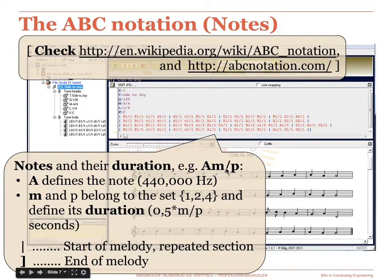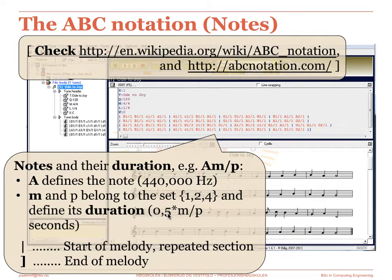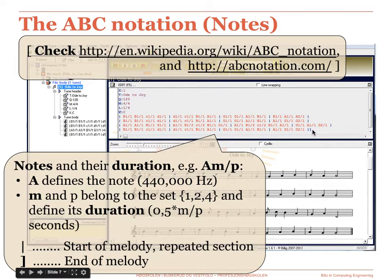Each note is followed by two numerical parameters called M and P. Both of these parameters have the value of 1, 2, or 4, and they represent the multiplication factor that defines the note duration. Assuming a base time of half a second, if M and P are respectively 2 and 1, we will have a note lasting for one second. Notice also that the vertical bar is used to mark the start of the melody, and that the close square bracket shown at the end marks the end of file.